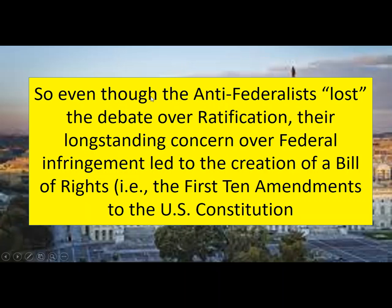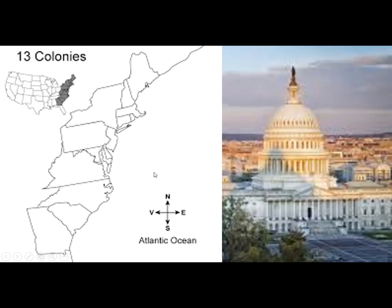Big point to remember though: even though the Anti-Federalists lost the debate over ratification, their longstanding concern over federal infringement led to the creation of a Bill of Rights — that is the first 10 amendments to the U.S. Constitution. Anti-Federalists in many of the states, especially parts of western New York and Pennsylvania and rural areas, were still worried about the new federal government and how it might exert too much power. In short, they didn't think power would be shared — they didn't think that federalism would actually work.